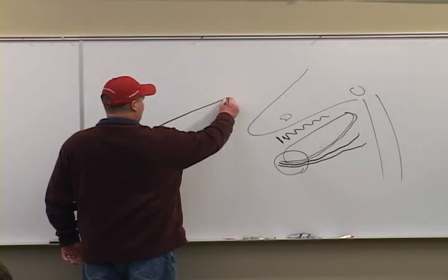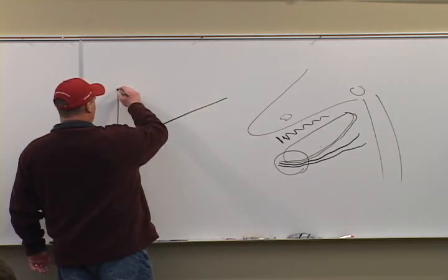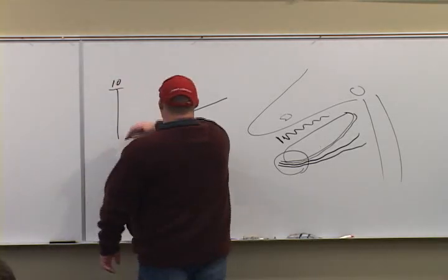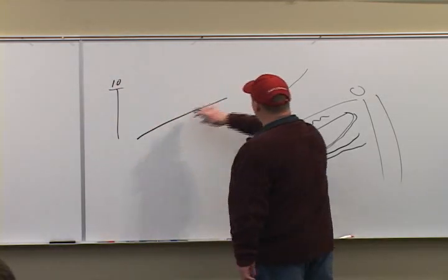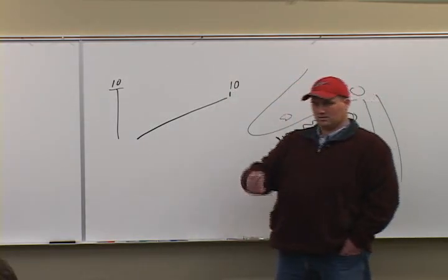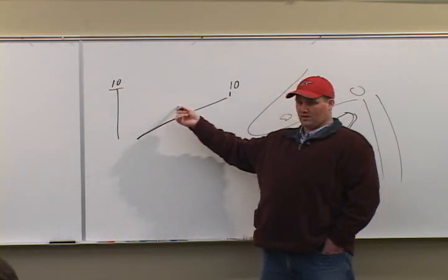If a fish has to traverse this, or a fish has to traverse this, and their goal is to get to 10 feet, so they can go up 10 feet this direction, or they can come up 10 feet this direction, what takes more energy?